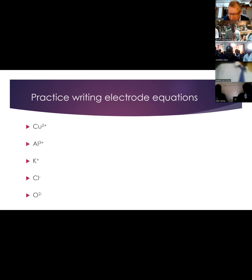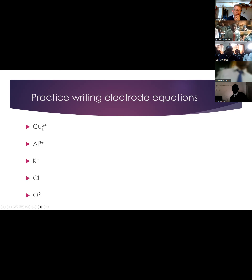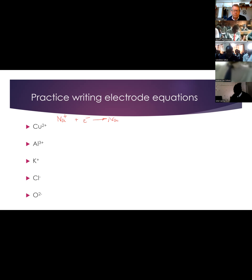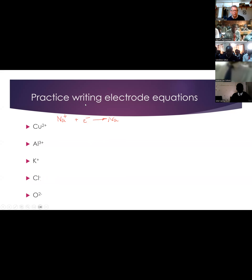Let's have a little bit of practice. See if you can write equations for these to become the atoms or molecules. So in the first one, it was Na - because it was positive, it has to pick up the right number of electrons to become the atoms. If it's a negative ion, it has to lose electrons. But remember that chlorine and oxygen go around in pairs. So just have a go. See if you can write some equations for copper, for aluminium, for potassium, for chloride, and for oxygen.